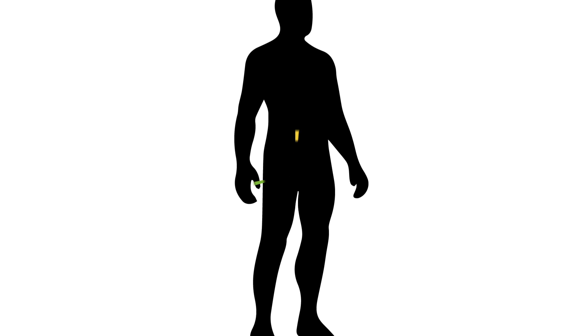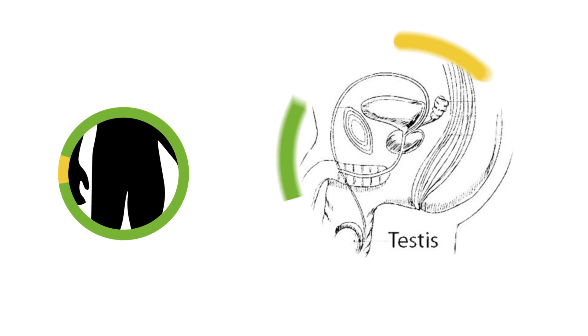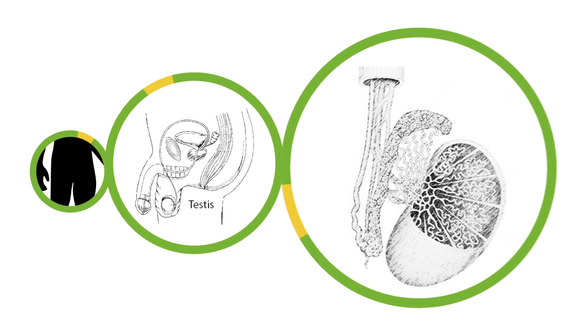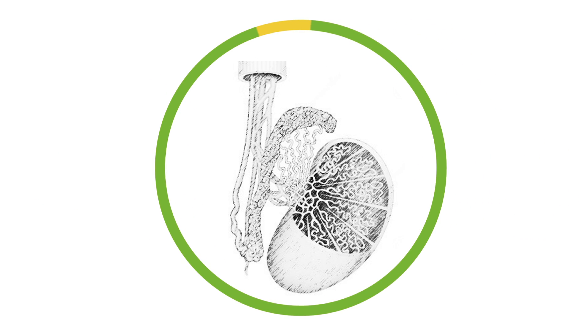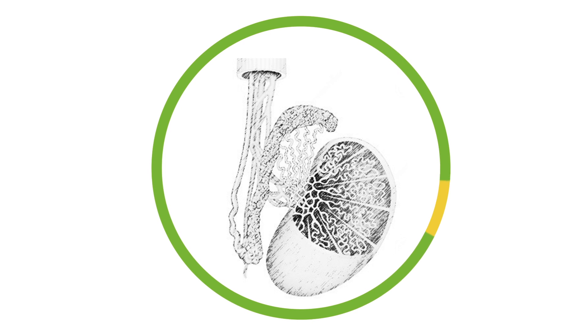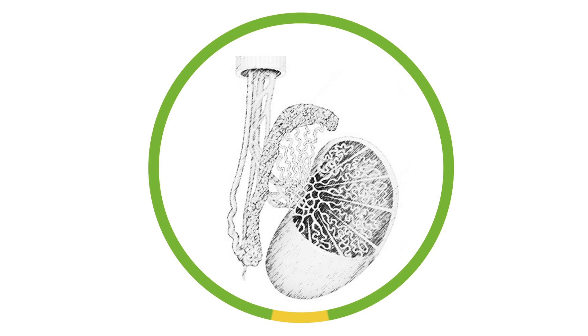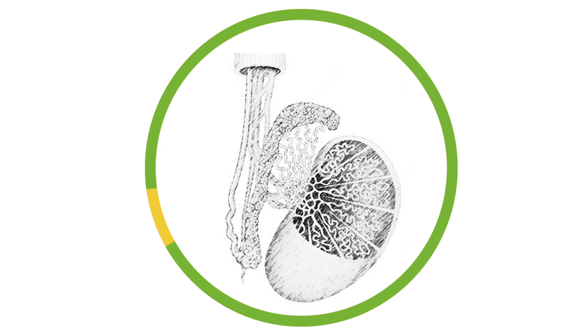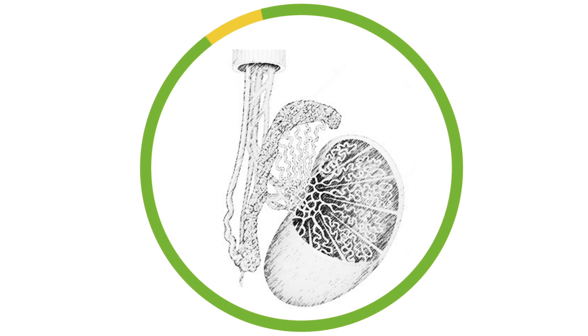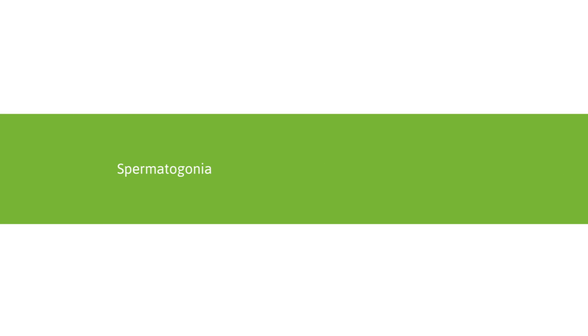The primary function of the testes is to produce sperm. In high magnification we can see that each testis contains many seminiferous tubules, which are connected at both ends to a collecting system. The tubules are aligned with a layer of cells that, from puberty to old age, develop into sperm cells. Spermatogonia are the cells from which sperm cells arise.